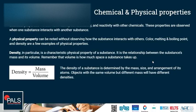Chemical properties include the flammability of a substance, the combustibility — meaning the reactivity with oxygen — and the reactivity with other chemicals. These properties are observed when one substance interacts with another substance. A physical property can be noted without observing how the substance interacts with others, like color, melting point, and density — a few examples of physical properties.